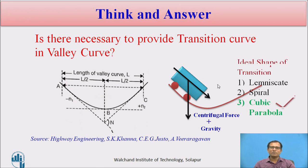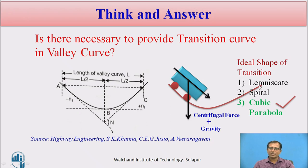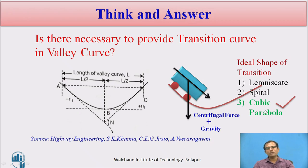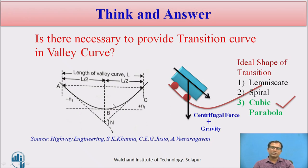The next question is: what is the ideal shape of the transition curve? The three shapes used in road construction are lemniscate, spiral, and cubic parabola. Because the deviation angle is smaller in valley curves, the paths followed by all three are similar. But among all three, we select the cubic parabola as the ideal transition curve because of its easier setting-out properties and calculation of coordinates. Since we are going for a fully transition curve design, there is no circular curve in between — the entire length of the valley curve is itself a transition curve.